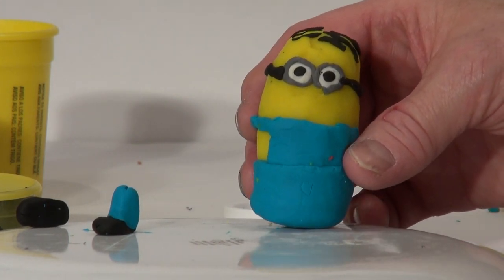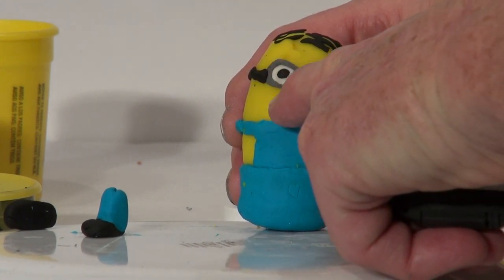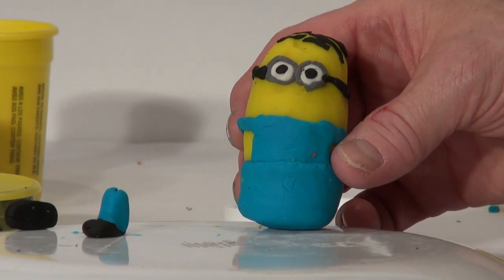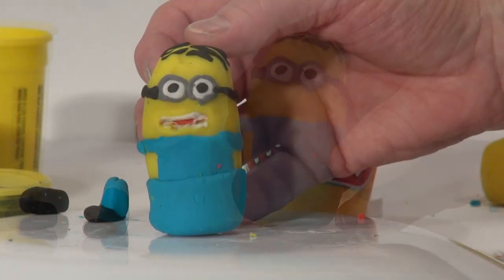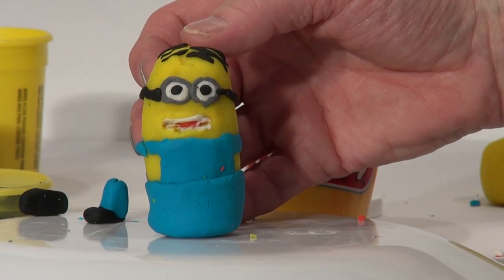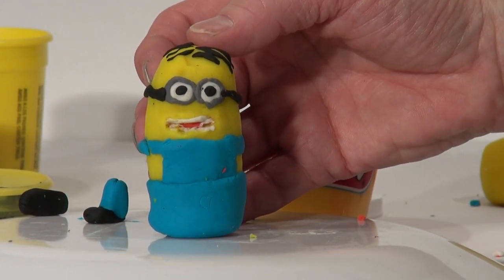Now I'll work on his mouth. It's a little smile right here, some red lips on it and a bit of white. That looks pretty good. Now I'll put on two yellow arms with black hands, then we'll add his feet.